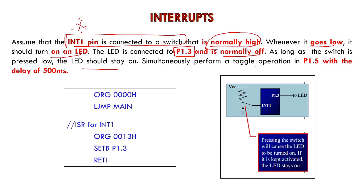Simultaneously, perform the toggle operation of port 1.5 with a delay of 500 milliseconds. The logic here is very simple. In the previous program — the interrupt program — I explained software-based interrupt. This is a hardware-based interrupt.